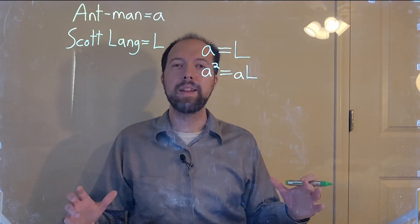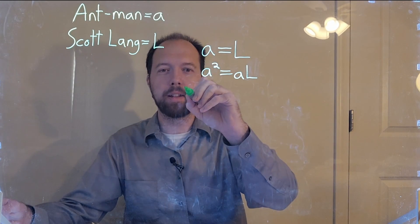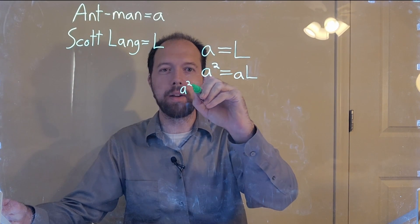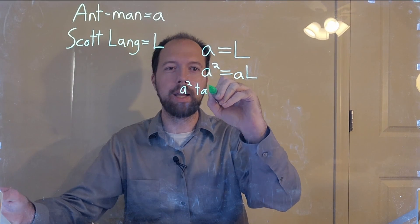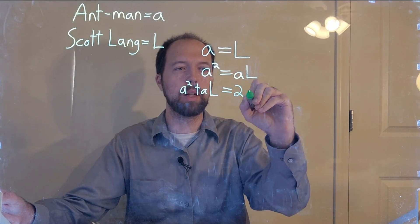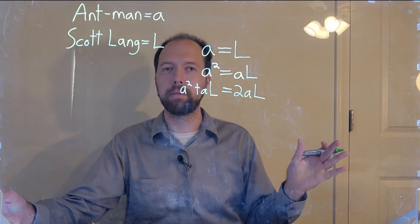Next, we're going to add AL to both sides. A squared plus AL is equal to 2AL.